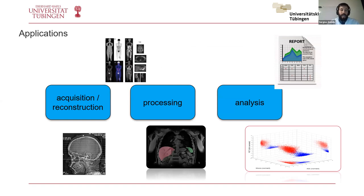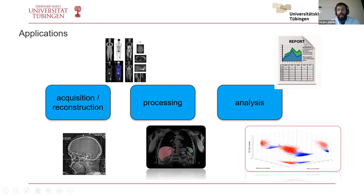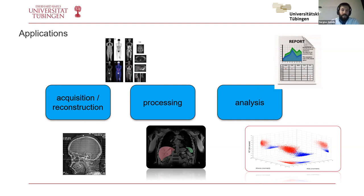My talk will be structured around a processing pipeline related to acquiring hybrid imaging data. It starts with acquisition and reconstruction — including examination planning — then image processing, and finally analysis where a report is made or statistical analysis is performed in the research context. I will start with the technical parts of acquisition and processing, then show aspects of image analysis and clinical image analysis.